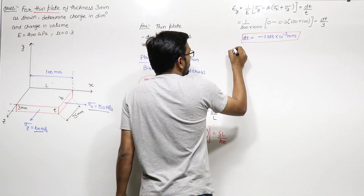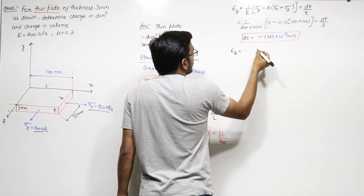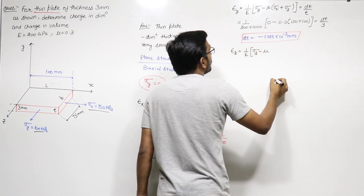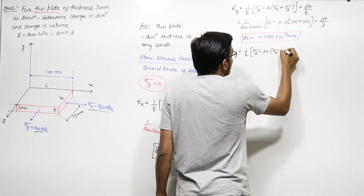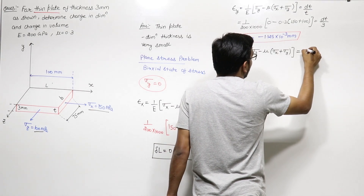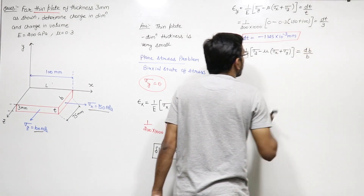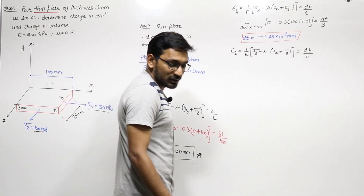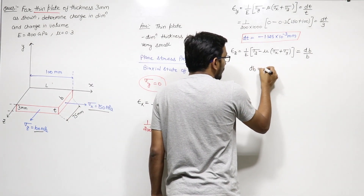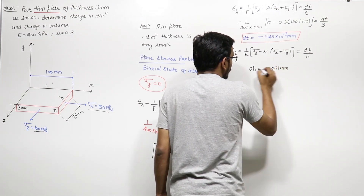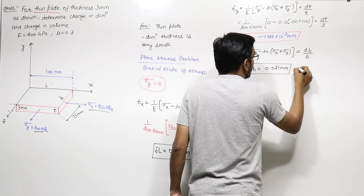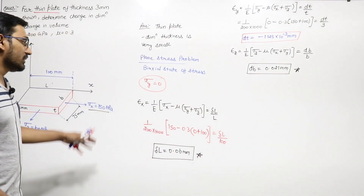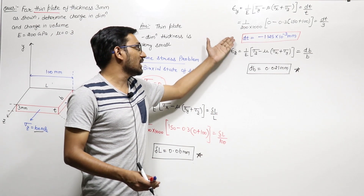Now let us find the normal strain in the z-axis. This equals 1/E times (sigma_z minus mu times (sigma_x plus sigma_y)). In the z-direction, the dimension is the width, so this equals change of width upon original width. Putting in the values of E, sigma_x, sigma_y, and sigma_z, the change in width = 0.021 mm. This gives us the total change of dimensions: change in length, change in thickness, and change in width.